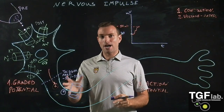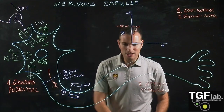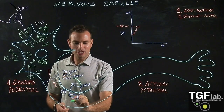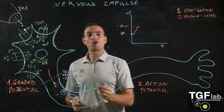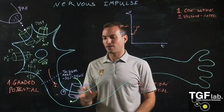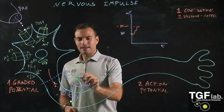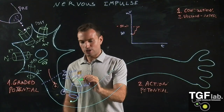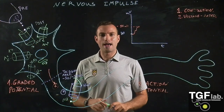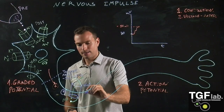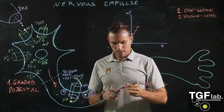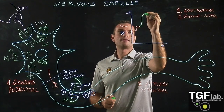The first voltage-gated ion channel we have is a sodium channel. This channel has two different gates: the activation gate, which opens the channel, and the inactivation gate, which inactivates the channel. When we achieve the graded potential intensity enough to reach the trigger area at around -50 to -55 millivolts, the activation gate of the sodium channel opens, sodium enters the cell according to the concentration gradient, increasing positive charges and depolarizing the cell membrane.